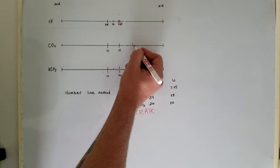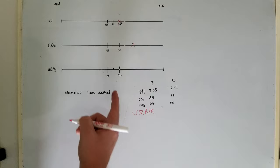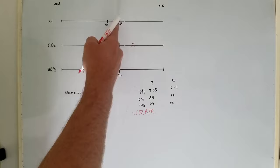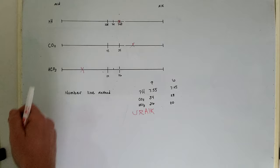Your bicarb is 20, and that's down here on the acid side. So we can see that we have respiratory alkalosis, but our pH is in the normal range—it's not kind of in the normal range, it is in the normal range.